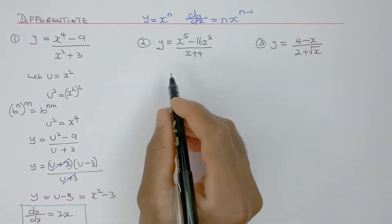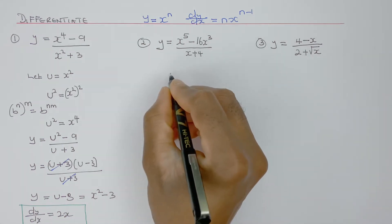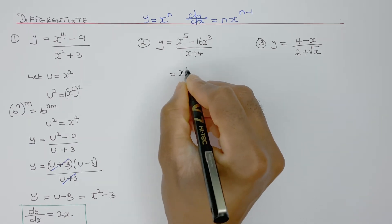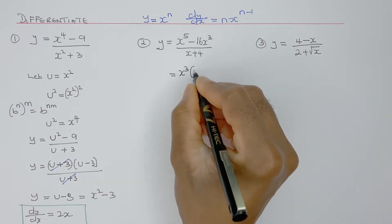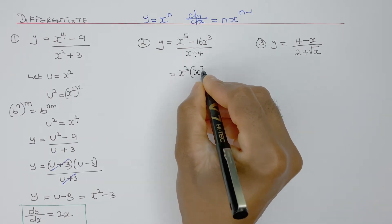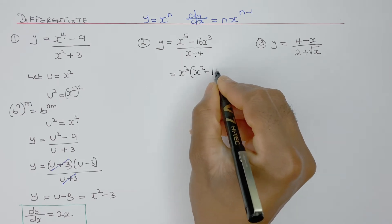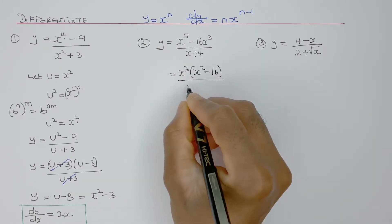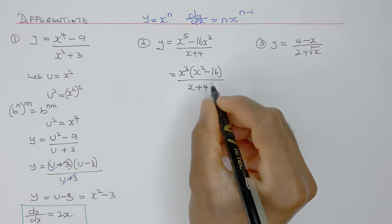Question 2. x to the power 3 is a common factor, so I get x squared minus 16 over x plus 4.